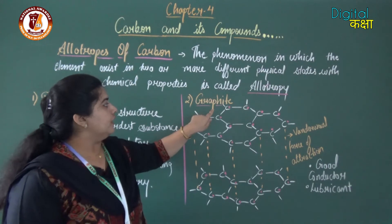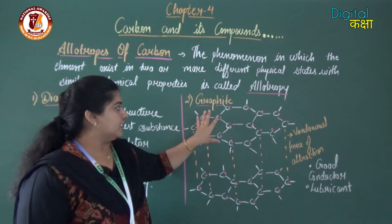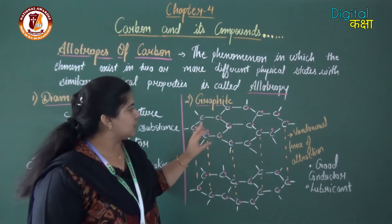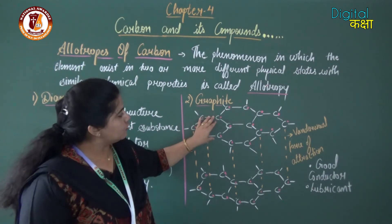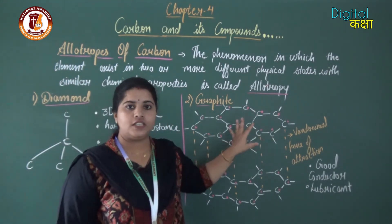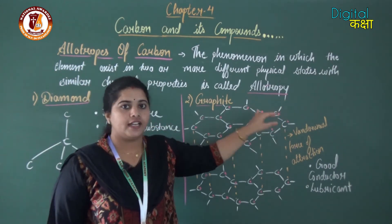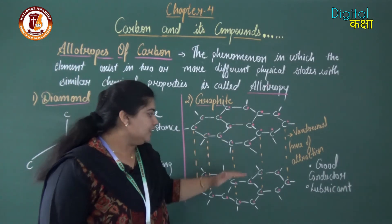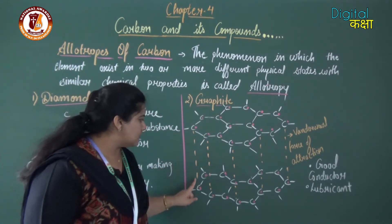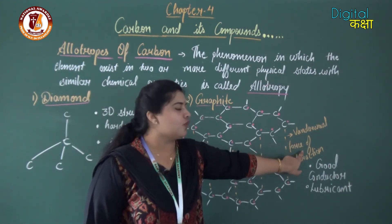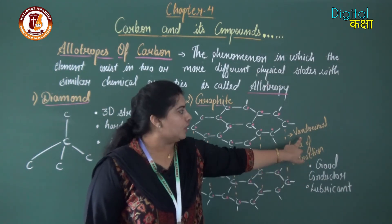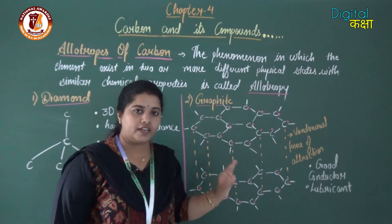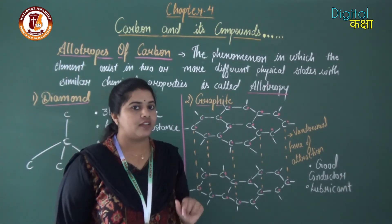The next allotrope is graphite. Graphite is also made up only of carbon atoms. Its structure has packed hexagonal rings of six carbon atoms — one, two, three, four, five, six — and so many hexagonal rings are attached to each other, forming a layer. Graphite has hexagonal ring layers: one layer, another layer, and in between these layers there is a weak bonding shown by dots — van der Waals force of attraction, which is the weakest force, representing surface-to-surface interaction.